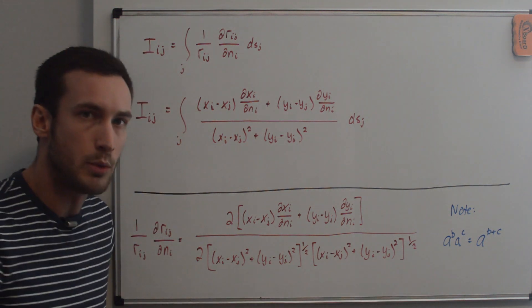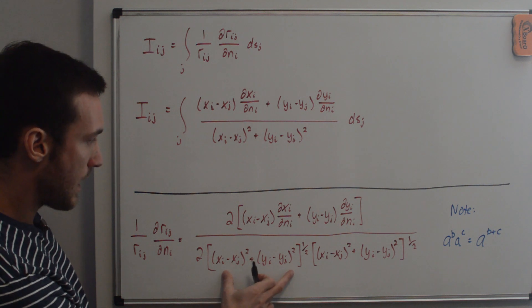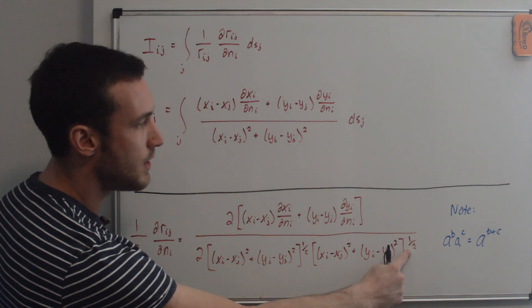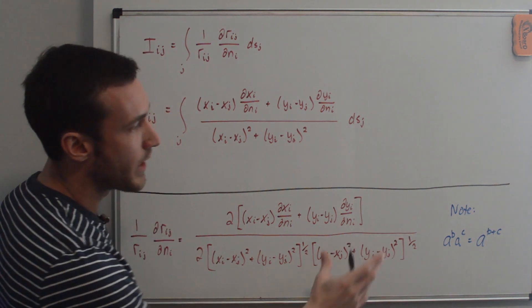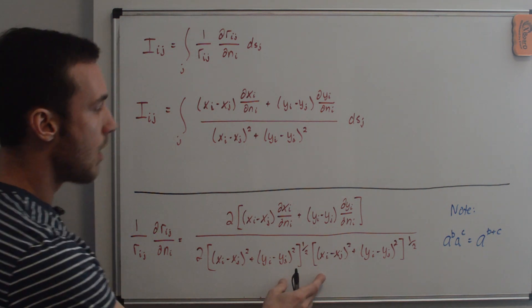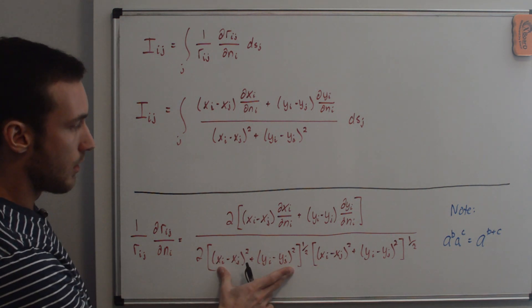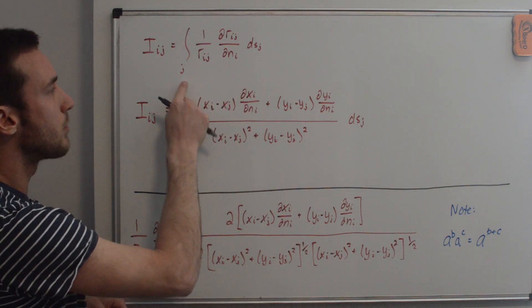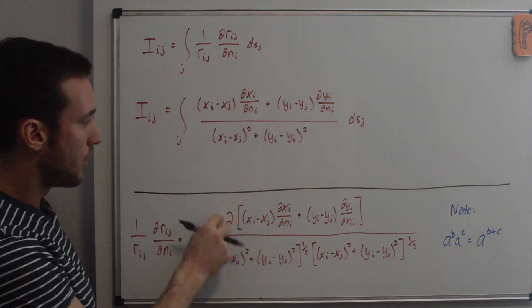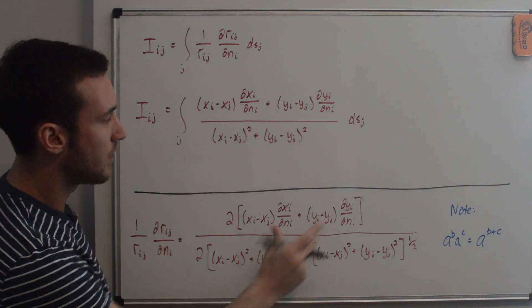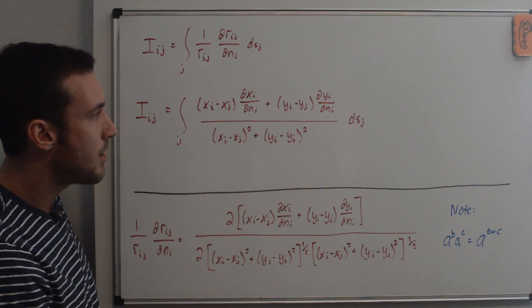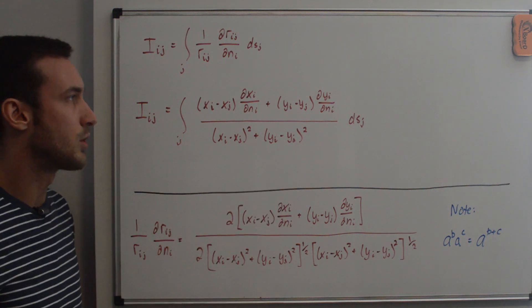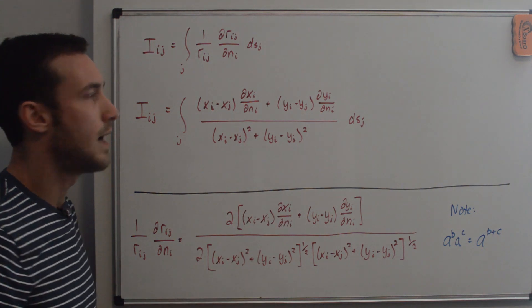Using the identity a^b times a^c = a^(b+c): we have the same term to the power 1/2 twice, so they combine to give that term to the power 1. The 2's also cancel. Rewriting the full expression: in the numerator we have the bracketed inside terms, and in the denominator just that expression without the 1/2. This is the integral we're solving, but we still have partial derivatives in here to tackle next.